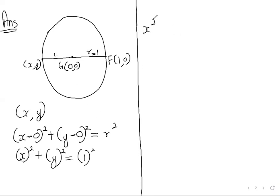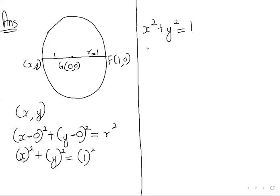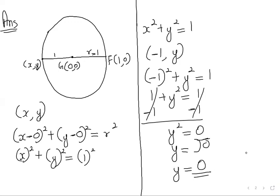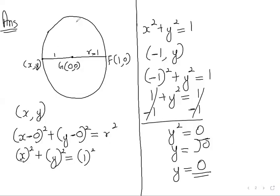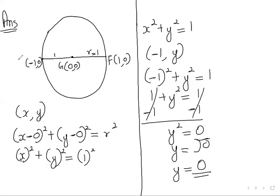So X² + Y² = 1. For point H with coordinates (-1, Y), we substitute X = -1: (-1)² + Y² = 1, which gives 1 + Y² = 1. Subtracting 1 from both sides: Y² = 0, so Y = √0 = 0. Therefore point H has coordinates (-1, 0).